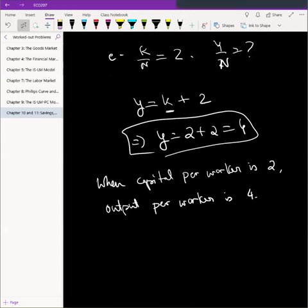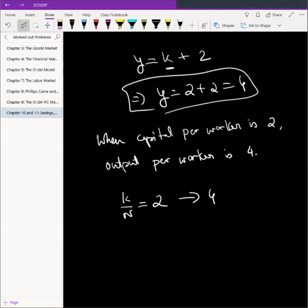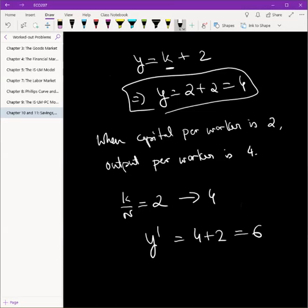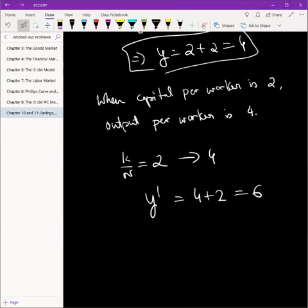Next part is what happens to Y by N if K by N is doubled? So K by N we knew was 2. Now suppose it becomes 4. Then what will happen? Let's call it Y prime. So 4 plus 2 is 6. So effectively, once again, mathematically very easy.